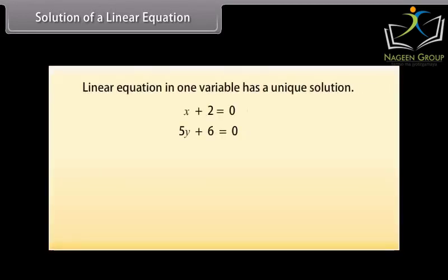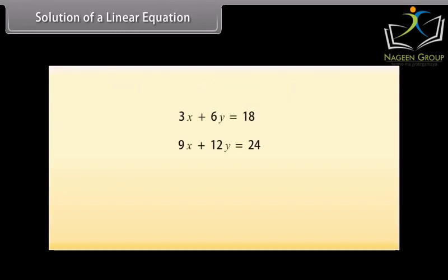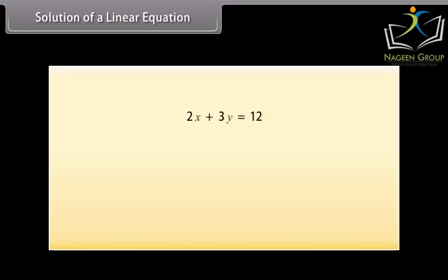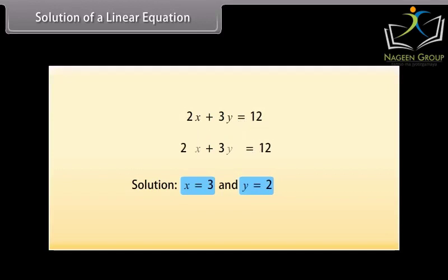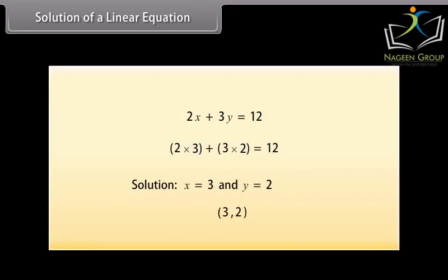Solution of a Linear Equation. We know that every linear equation in one variable has a unique solution. But how many solutions do linear equations in two variables have? Since there are two variables, a solution means a pair of values — one for X and one for Y — which satisfy the given equation. For the equation 2X plus 3Y equals 12, X equals 3 and Y equals 2 is a solution because substituting these values gives 12. We can write this solution as (3, 2).